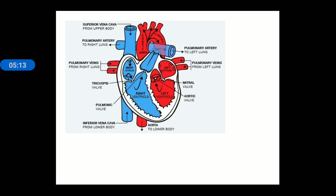Through the right pulmonary artery and left pulmonary artery, deoxygenated blood goes towards the lungs. The lungs add oxygen to it, so it becomes oxygenated blood. That oxygenated blood is then brought back by the pulmonary veins. You can see the pulmonary veins shaded in red — right pulmonary veins and left pulmonary veins — both opening into the left atrium.